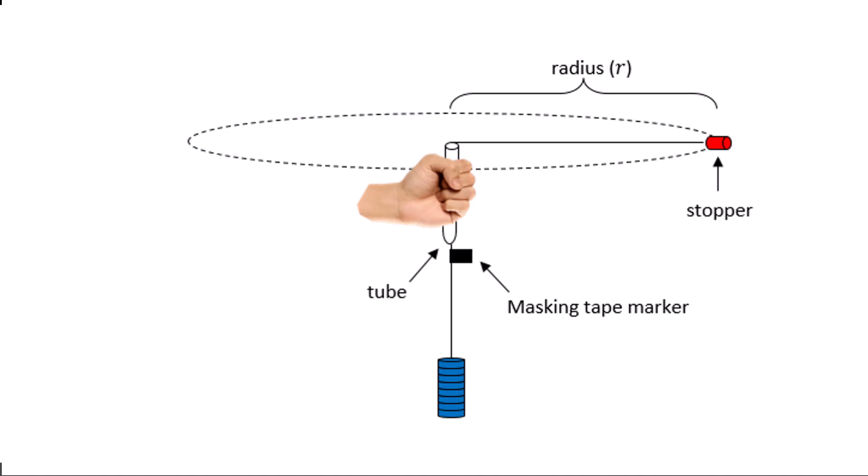There's a tube that can be held onto to allow the rotation of the rubber stopper without impeding it, and there's a set of masses down the bottom that generate a weight force.